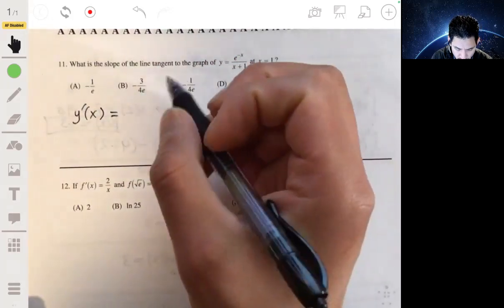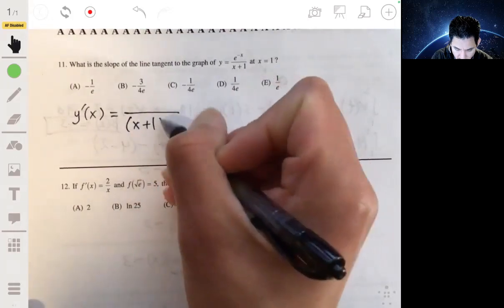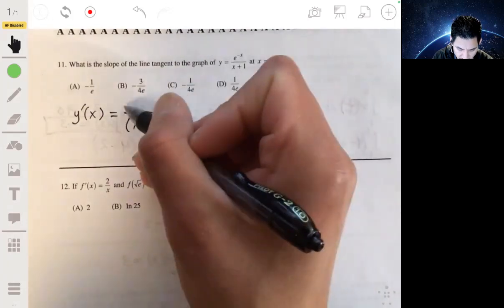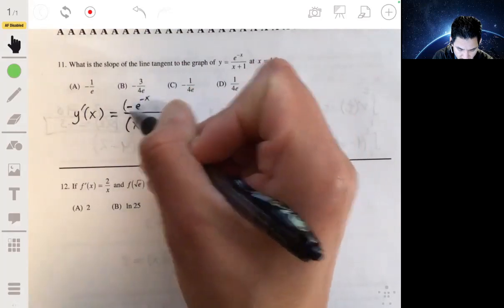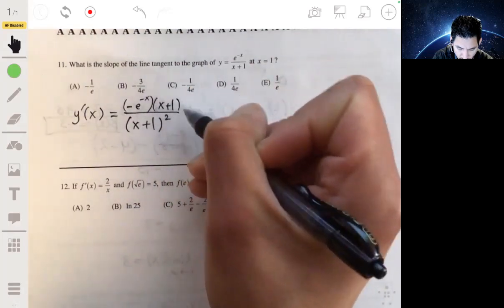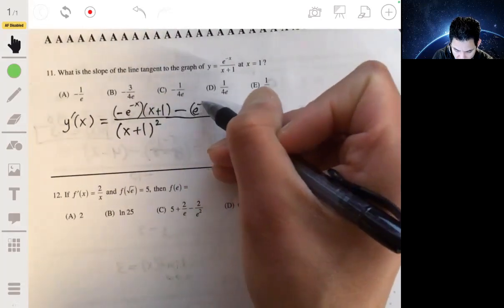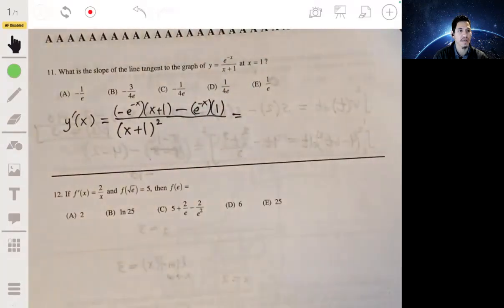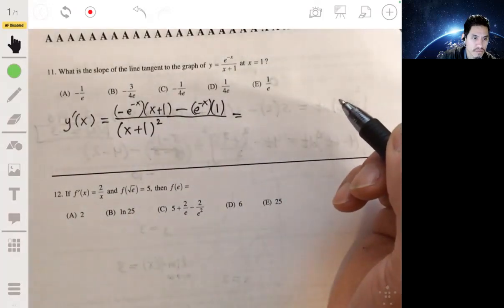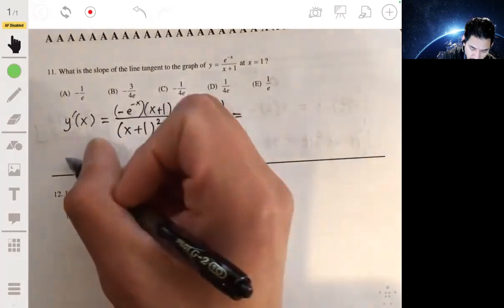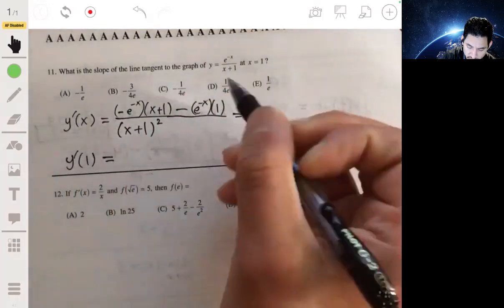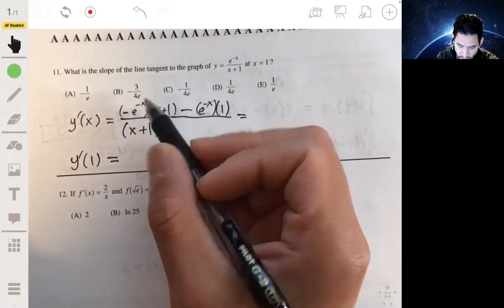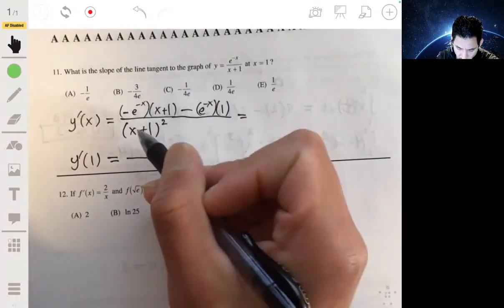And for that, we're going to use the quotient rule, where it's equal to the denominator squared. On top, we're going to take the denominator, the derivative of the top, which would be negative e^(-x), multiplied by the bottom, minus the top function, multiplied by the derivative of the bottom function. And so you'll get this. You can kind of simplify if you want, but let's just go ahead and just start plugging one. Because now we just find y'(1), and we just plug one into x for here.